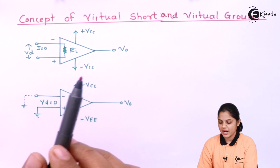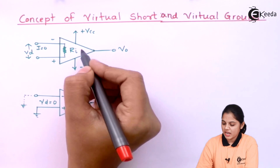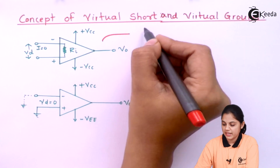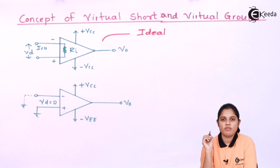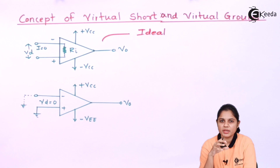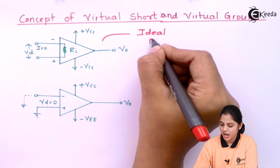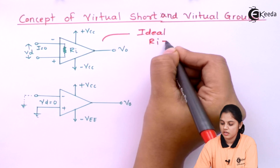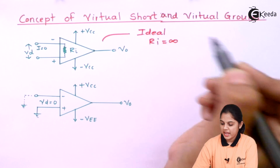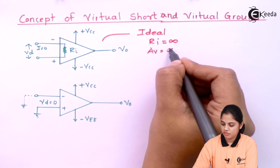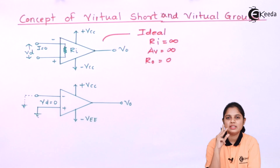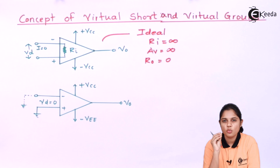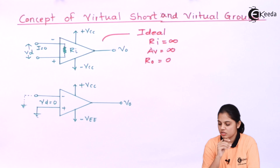First of all, we assume that this op-amp is an ideal one. When the op-amp is ideal, recall these characteristics: Ri is infinite, Av (voltage gain) is infinite, and Ro is equal to zero. These are the three important parameters to understand when we use the term 'ideal op-amp.'